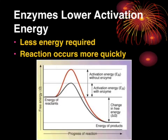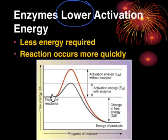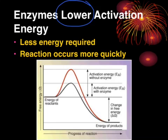What enzymes do with activation energy is they lower it — they decrease it so that less energy is required, and that means the reaction can occur more quickly. Looking at this graph, the red line shows the activation energy necessary for a reaction to occur without an enzyme, whereas the black line is lower — lower activation energy means the reaction occurs much more quickly. This difference, lowering the activation energy from A to B, makes the reaction happen.